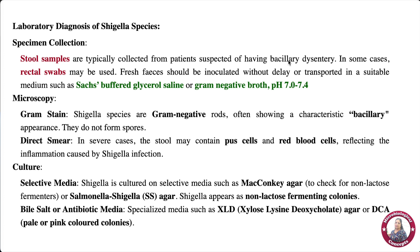For laboratory diagnosis, stool samples and rectal swabs are collected from patients suspected of having bacillary dysentery. If processed without delay, direct analysis is done; otherwise, feces are inoculated into transport medium — Sach's buffered glycerol saline or gram-negative broth — at pH 7 to 7.4. On microscopy after Gram staining, gram-negative non-sporing rods are seen. In severe cases, direct smear may show pus cells and red blood cells.